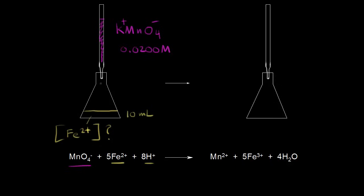We're going to drip in the potassium permanganate solution, and when we do that we're going to get a redox reaction. Here is the balanced redox reaction. If you're unsure about how to balance a redox reaction, make sure to watch the video on balancing redox reactions in acid.